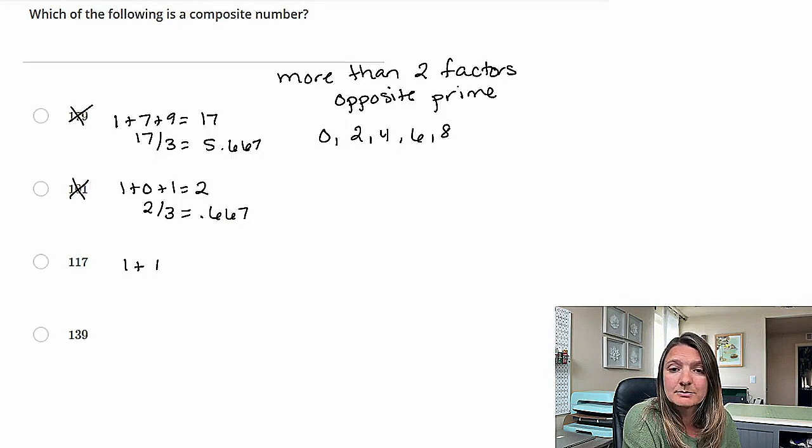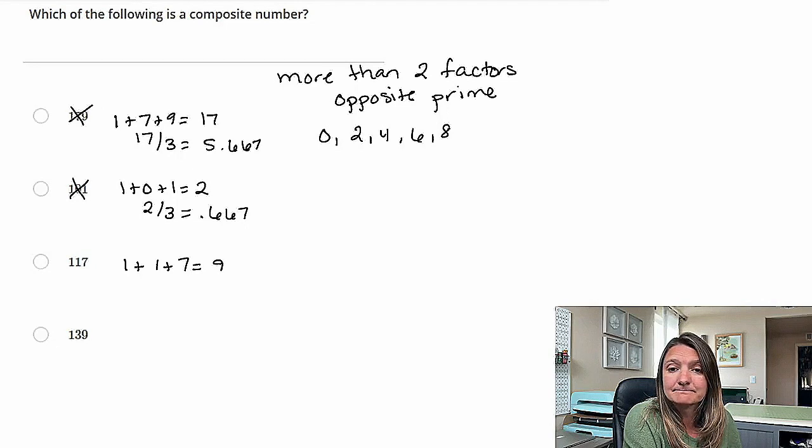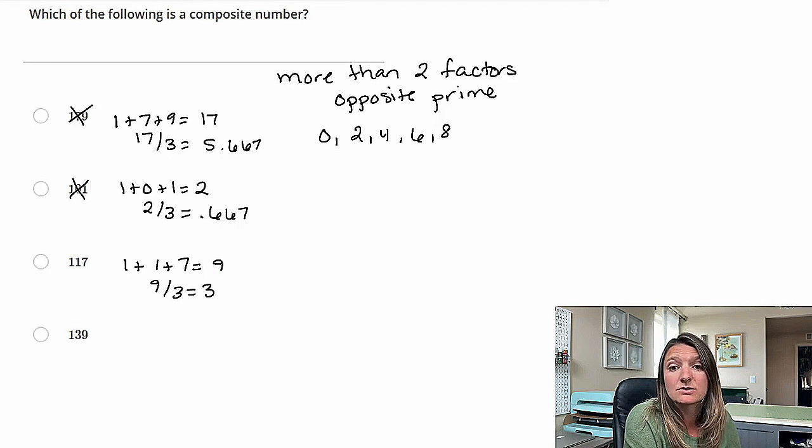1 plus 1 plus 7. That's going to give us 9. And we know that 9 divided by 3 is a whole number. It is 3. So that is actually the composite number.